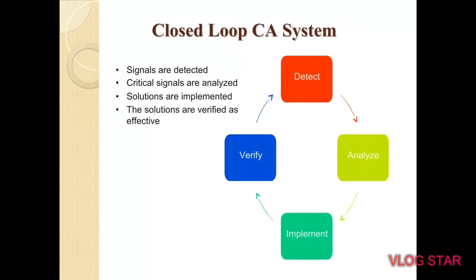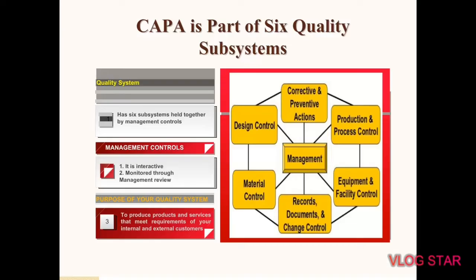Let's understand what the closed-loop CAPA system actually is. First, signals are detected. Then the critical signals are analyzed. After complete analysis, solutions are implemented. After implementation of the adequate solution, the solutions are verified for effectiveness. If found effective, the closed-loop CAPA system is found satisfactory. If the solution is not satisfactory, then another adequate CAPA is proposed for the defect again.